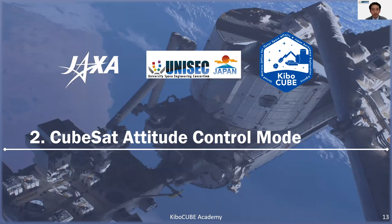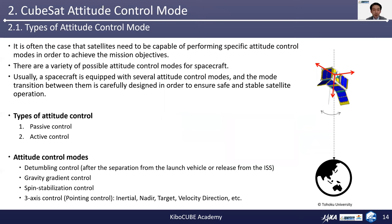In this next chapter, let me introduce the CubeSat attitude control modes. It is often the case that satellites need to be capable of performing specific attitude control modes in order to achieve mission objectives. There are a variety of possible attitude control modes for satellites. Usually, a satellite is equipped with several attitude control modes, and the mode transitions between them are carefully designed in order to ensure safety and stable satellite operation in space. From time to time, these need to be autonomous. For attitude control, attitude determination is also necessary beforehand, and therefore attitude determination sensors and attitude control actuators are required in general.